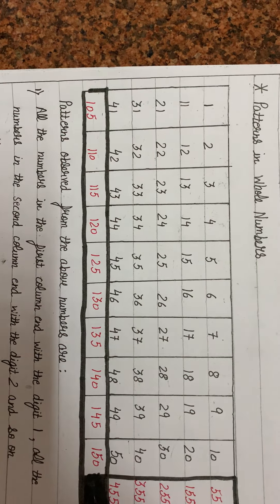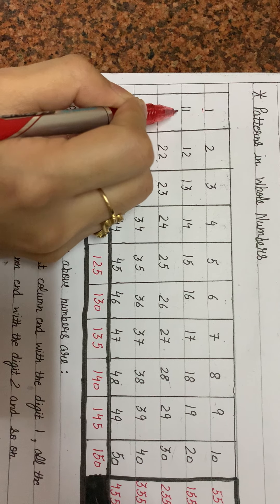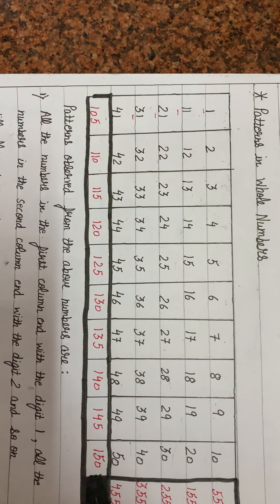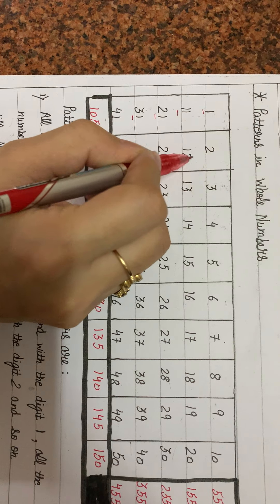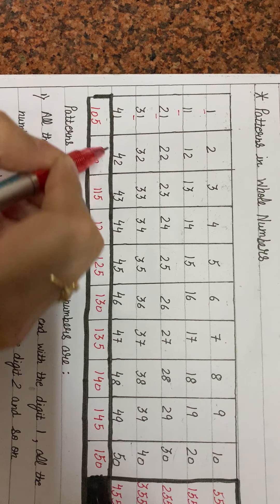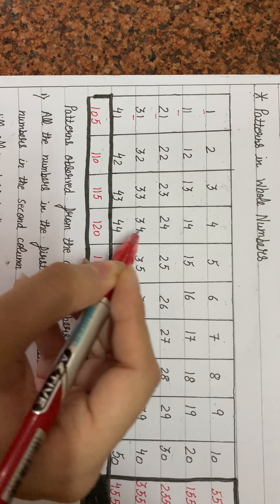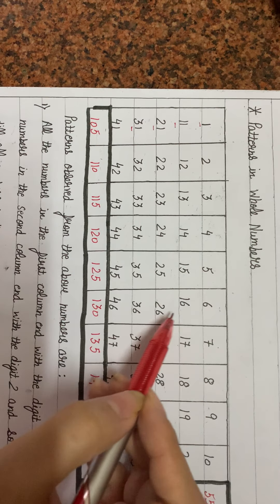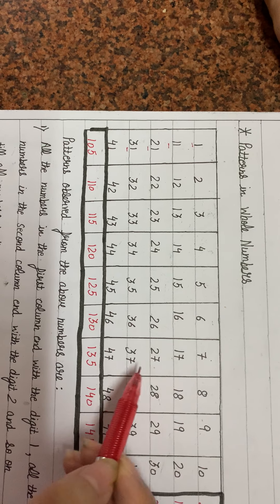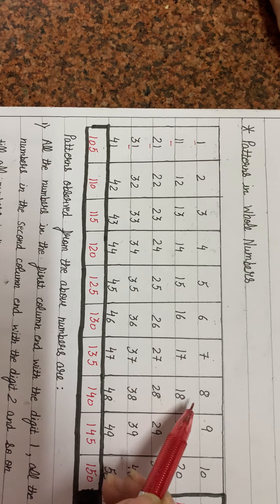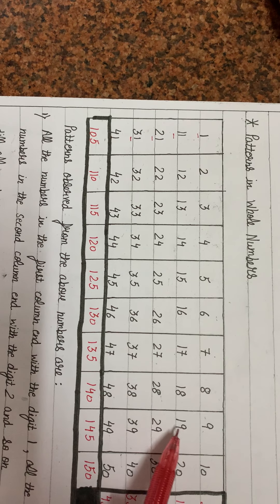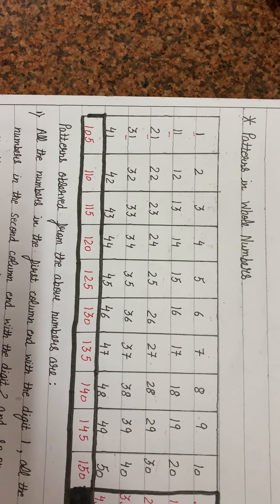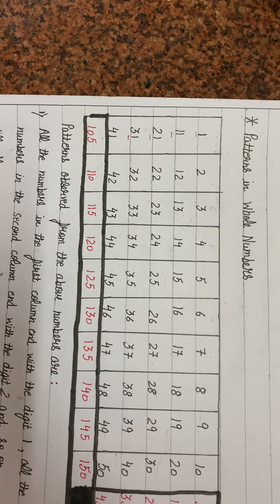The first pattern we can observe: in the first column, all numbers end with digit 1. In the second column, numbers end with 2. In the third column, with 3. In the fourth with 4, fifth with 5, sixth with 6, seventh with 7, eighth with 8, ninth with 9, and in the tenth column, numbers end with 0. This is the first pattern we observe.